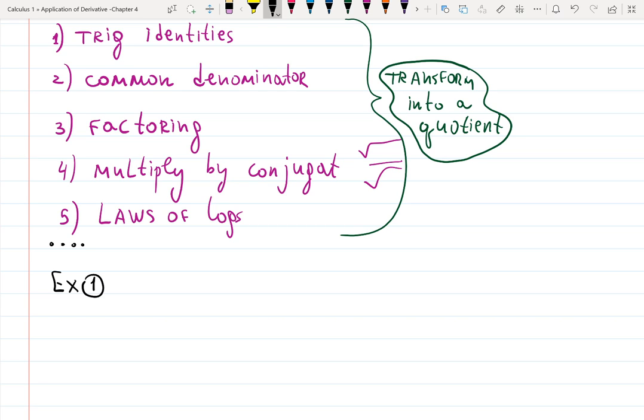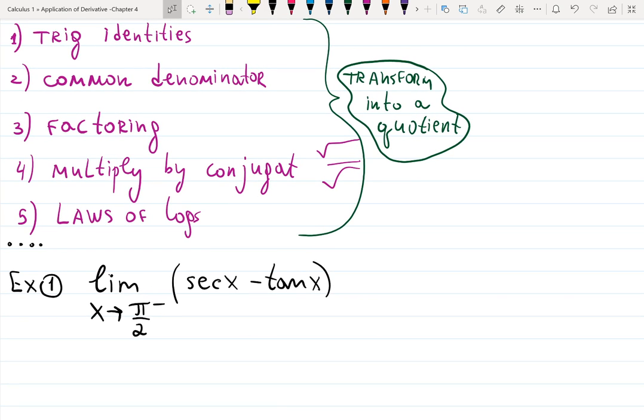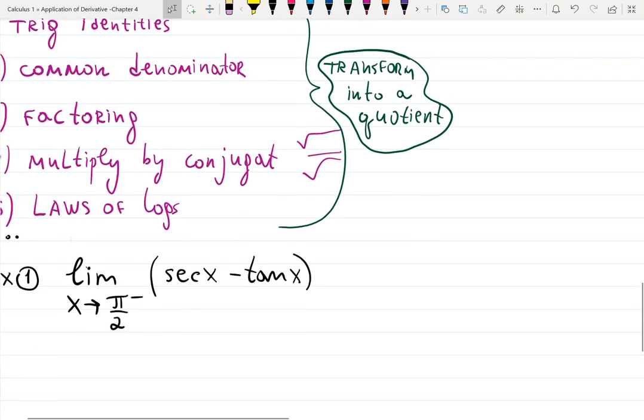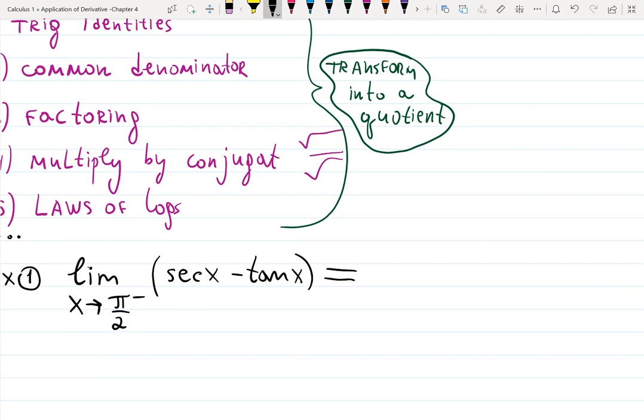The first example has a limit as x approaches pi over 2 from the left. If we see pi over 2, probably we're going to work with trigonometric functions. And indeed, it is secant x minus tangent x. Doesn't sound bad, though. Why do we have to even be bothered here? Let's check what is going on.